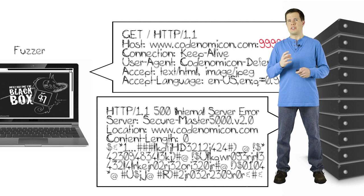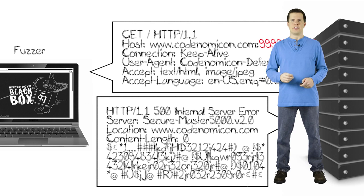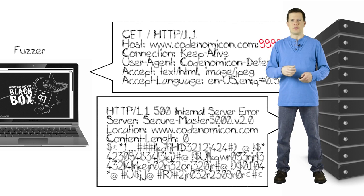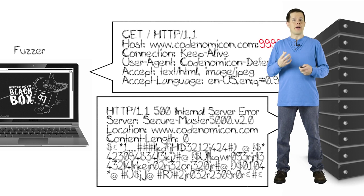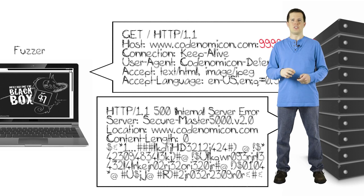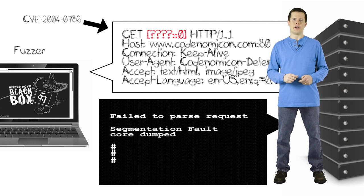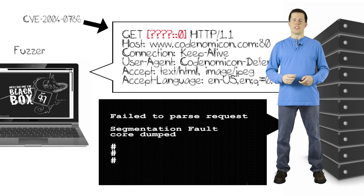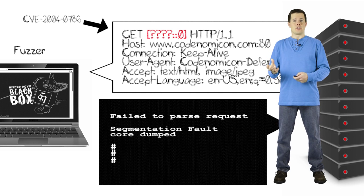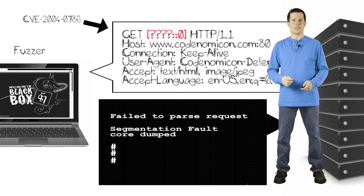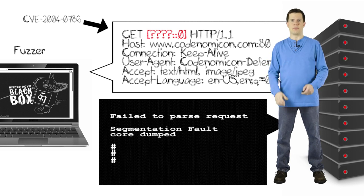A third scenario is a test case that causes unexpected behavior on the target. We send a malformed input and get back a response we didn't quite expect. You have to decide what you consider to be an error — we'll go into this in more detail. The final scenario is that we've caused a failure in the target: we sent a test case and crashed a process or caused some other type of failure. These are the basic scenarios of what happens during fuzz testing.